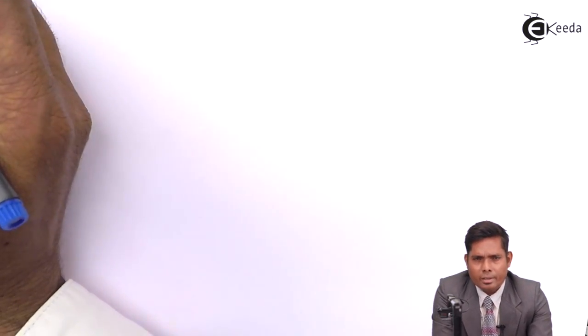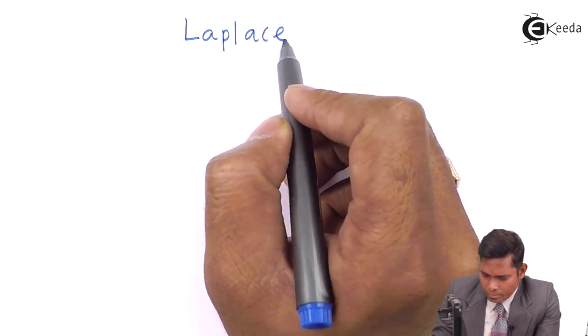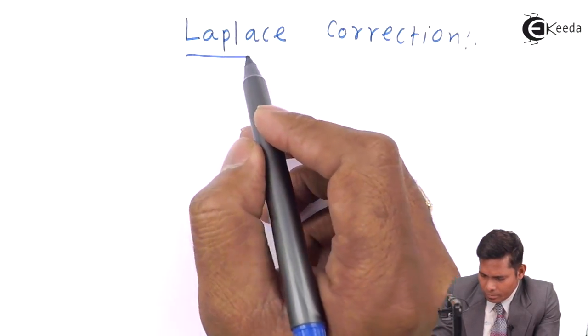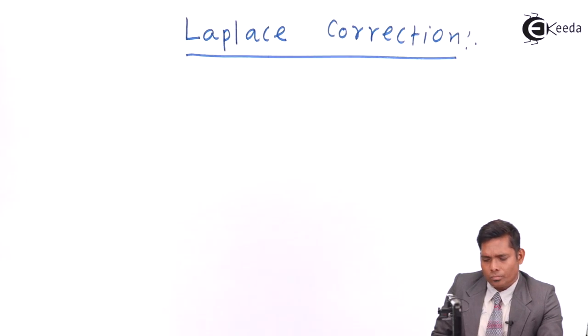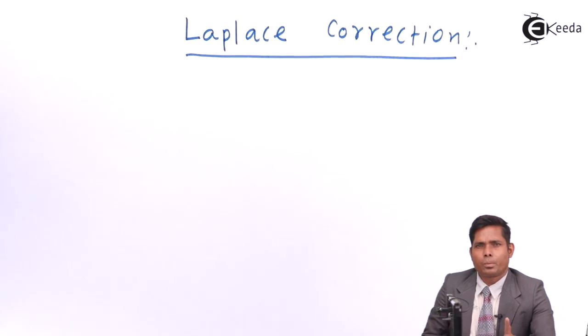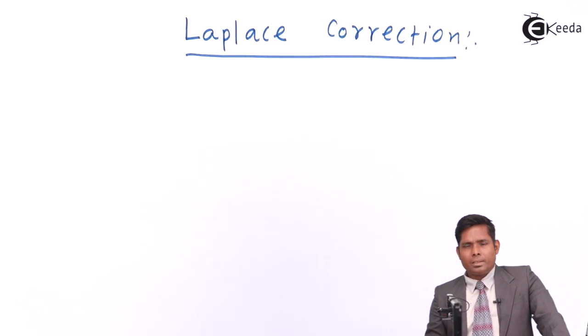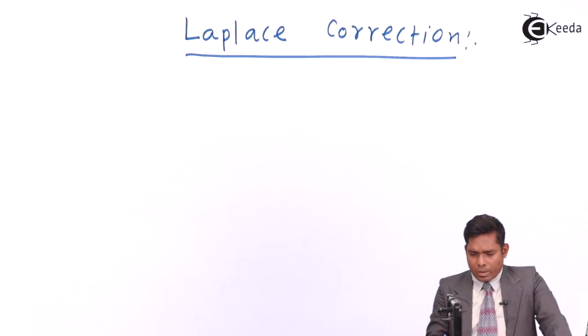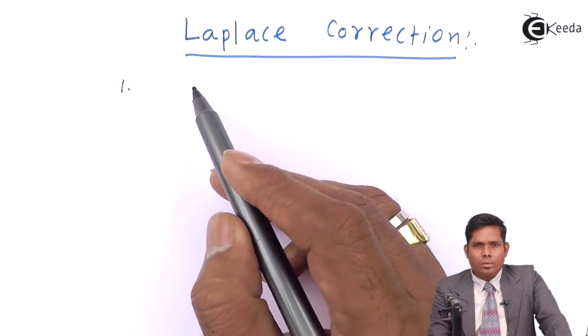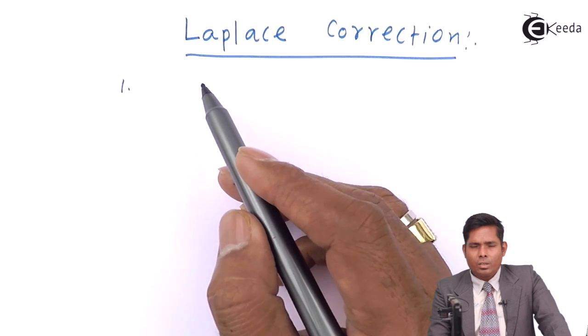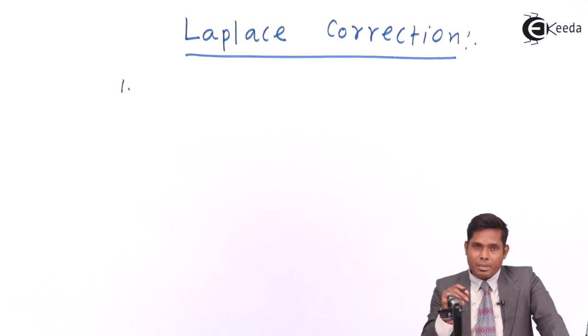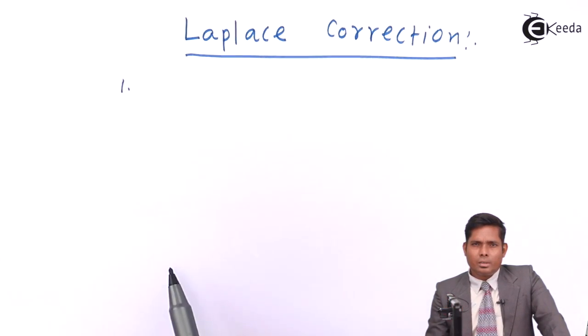Laplace modified Newton's idea and made a small change — we call it a correction, the Laplace correction. There was one fault line: the assumption of an isothermal process by Newton. Laplace said it is not an isothermal process; it is an adiabatic process. According to Laplace, the process taking place when a sound wave propagates in air is an adiabatic process, not an isothermal process.